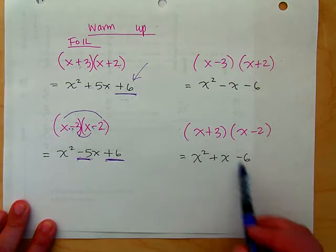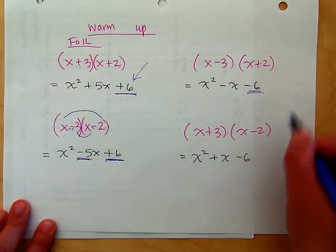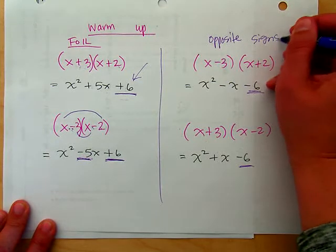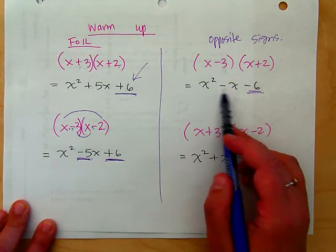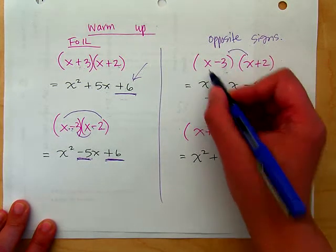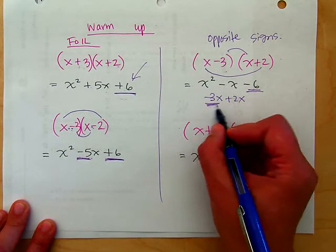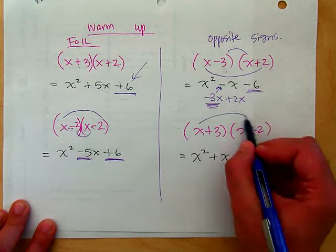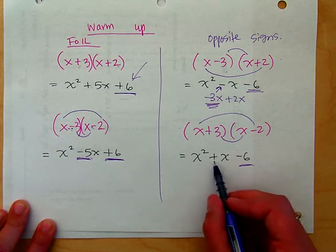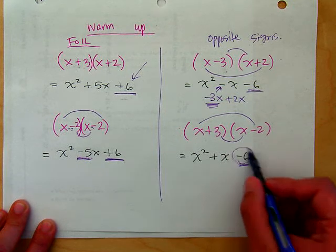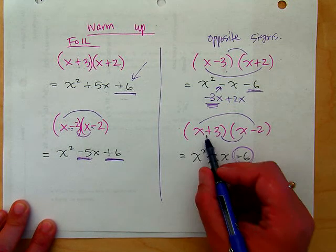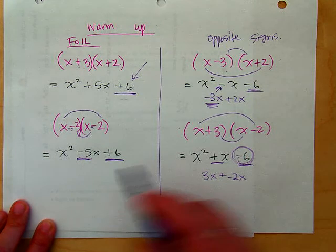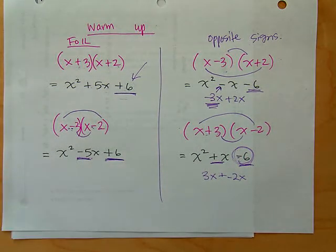When you have two opposite signs, the last term is negative — a negative times a positive gives a negative. So when the last number is negative, you have opposite signs. The negative one in the middle came from negative three x and positive two x, where the bigger number was negative. To get a positive middle term, the positive number needs to be bigger — the negative last term tells me the signs are opposite.